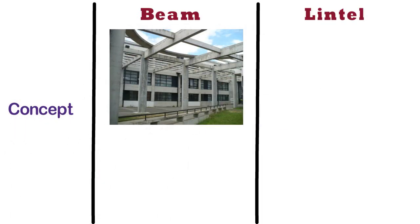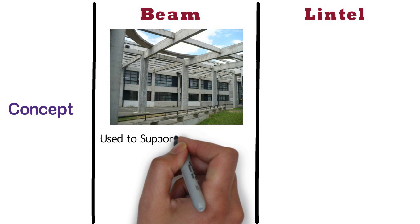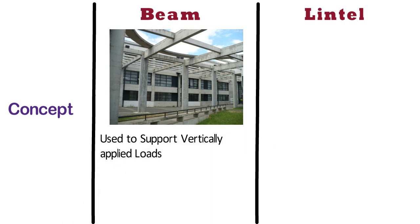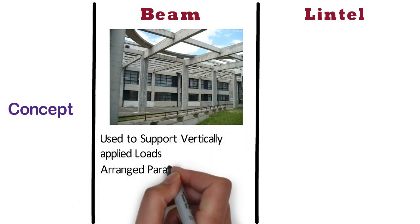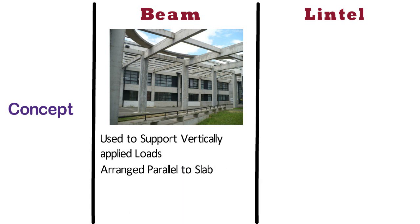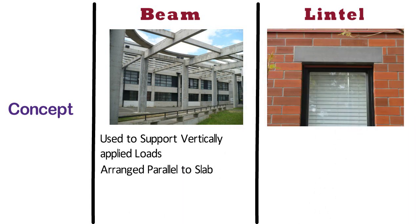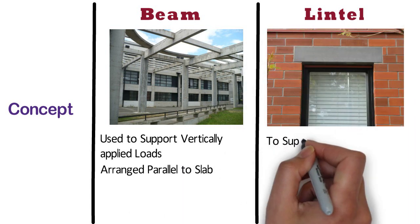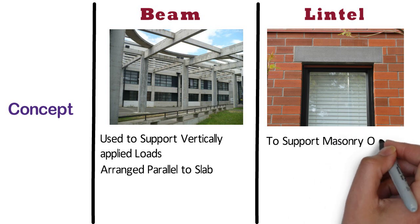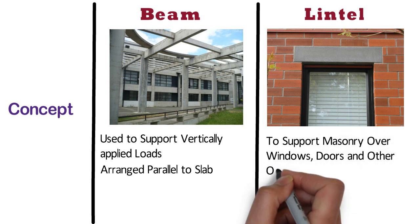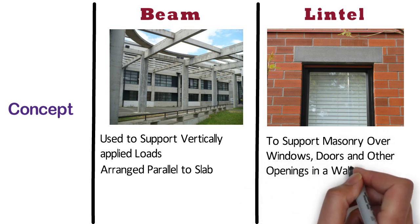Beams are the horizontal members used to support vertically applied loads. A beam is a horizontal member arranged parallel to the slab. Whereas, lintels are horizontal members used to support masonry over windows, doors, and other openings in a wall.